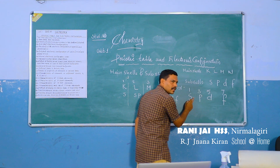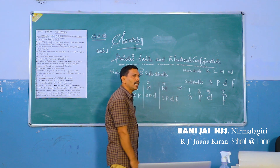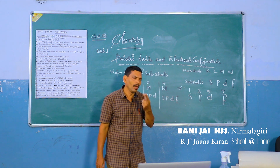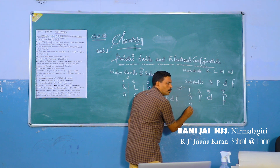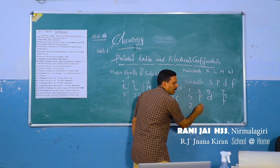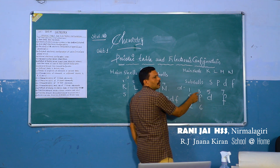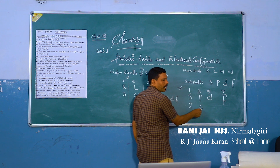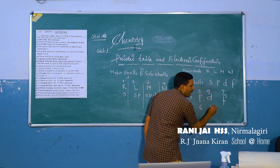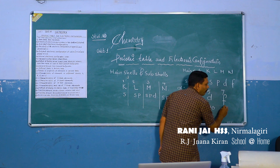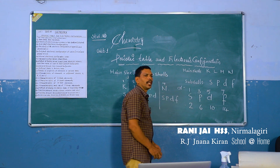The number of orbitals in sub-shells are 1, 3, 5, 7. Each orbital holds a maximum of two electrons. So the S sub-shell has one orbital and 2 electrons. The P sub-shell has three orbitals, so it holds 3×2=6 electrons. The D sub-shell has five orbitals and holds 10 electrons. The F sub-shell has seven orbitals and holds 14 electrons.